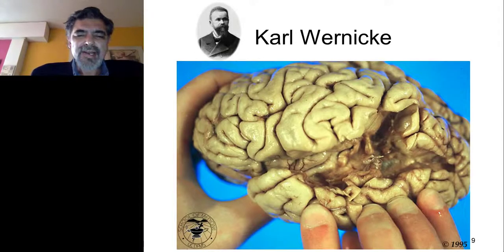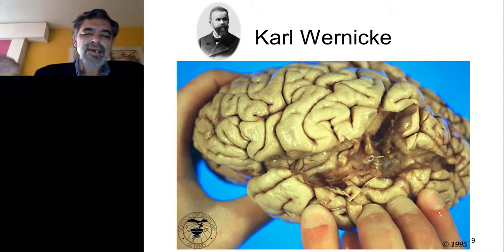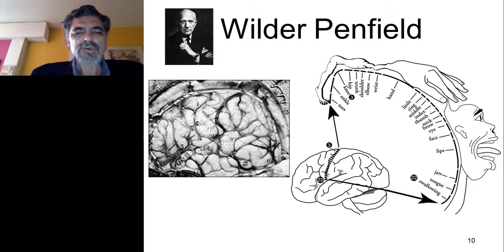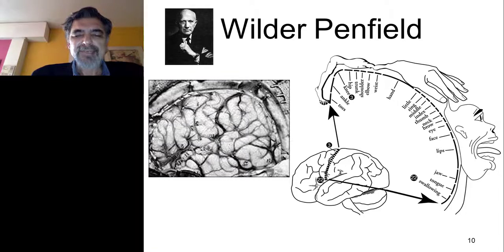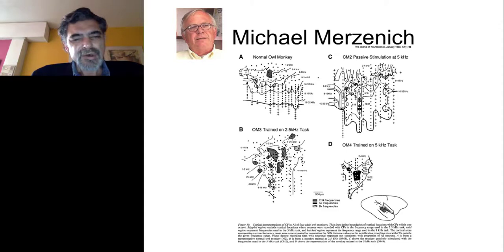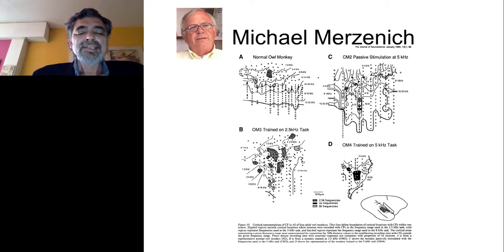Carl Wernicke described a similar area, but for the understanding and reception of language. Later, Wilder Penfield made a map of the cortex while performing epilepsy surgery procedures. It seemed that everything in the cortex is well organized, but also that everything is fixed — that all locations are there forever. However, Michael Merzenich, studying the representation of auditory functions in the cortex in animals, was able to show that this representation can change with experience.